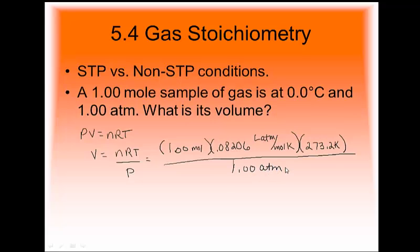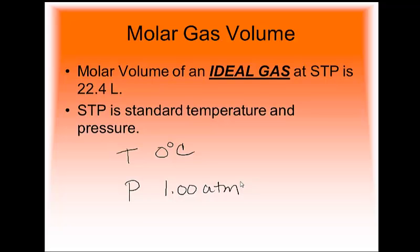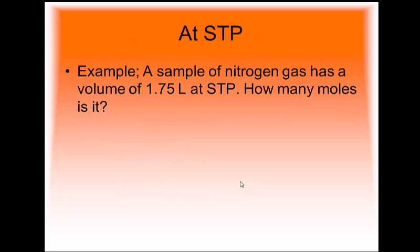Plug that into your calculator and what you should get is a volume of 22.4 liters. This is used as a conversion factor for volumes of gases — the molar gas volume. The molar volume of an ideal gas at STP is 22.4 liters. STP is standard temperature and standard pressure. For example: at standard temperature and pressure, a sample of nitrogen gas has a volume of 1.75 liters. How many moles is that?